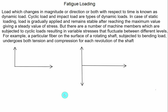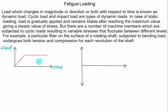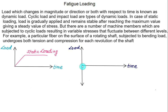We are already familiar with static loading. In static loading, if we plot load on the y-axis and time on the x-axis, the load is applied gradually, reaches a maximum value, and remains constant — that is called static loading. However, many situations arise where the load continuously varies in magnitude and direction with respect to time. That type of load is called fatigue loading, where the load increases to a maximum tensile value, returns to zero, becomes compressive, returns to zero again, and this cycle repeats.